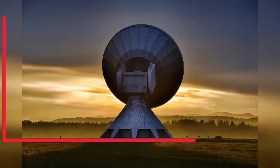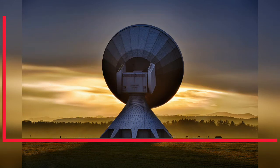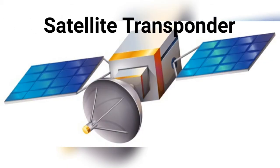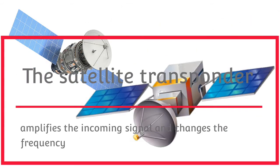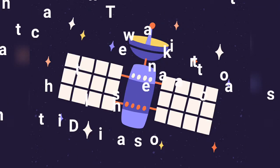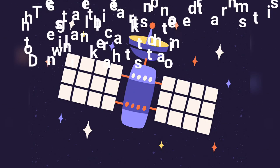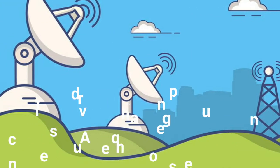An uplink transponder or other ground equipment transmits the desired signal to the satellite. The satellite transponder amplifies the incoming signal and changes the frequency. The satellite transponder transmits the signal back to the downlink Earth station and the ground equipment receives the signal.